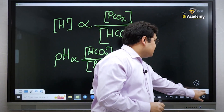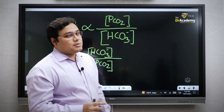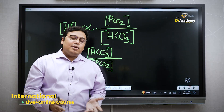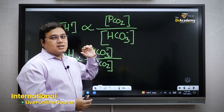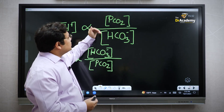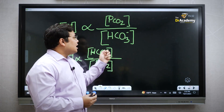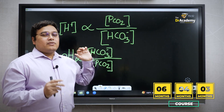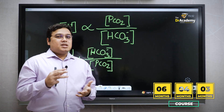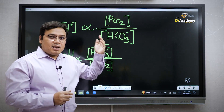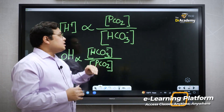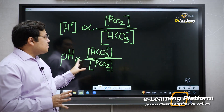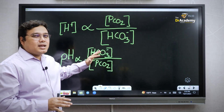In arterial blood gas analysis, first we have to understand a few equations. Equation number one: the concentration of hydrogen ions is proportionate to the partial pressure of carbon dioxide and inversely related to the bicarbonate concentration. Since we take the logarithm of H+, we express it as pH — so increased H+ means decreased pH, and decreased H+ means increased pH, or alkalosis.